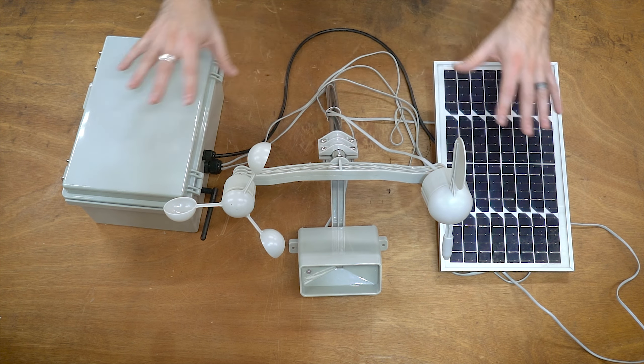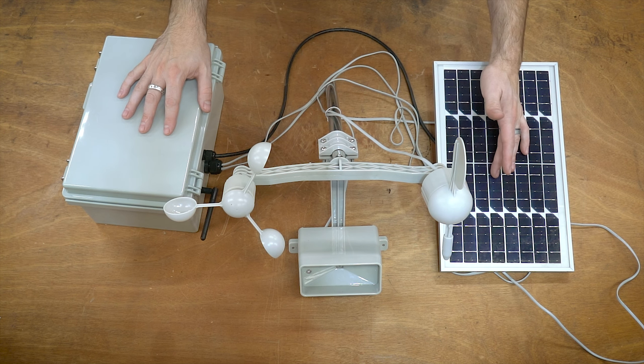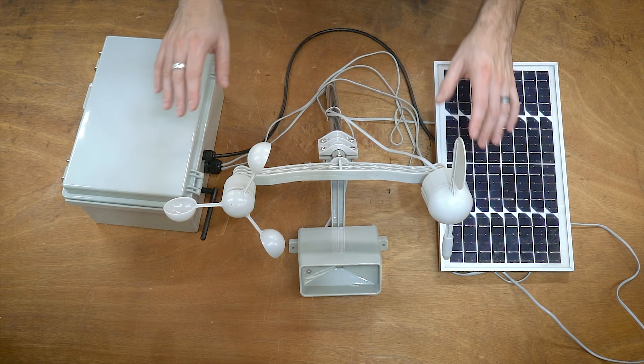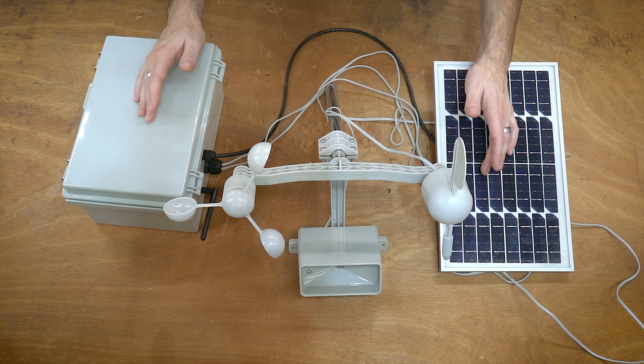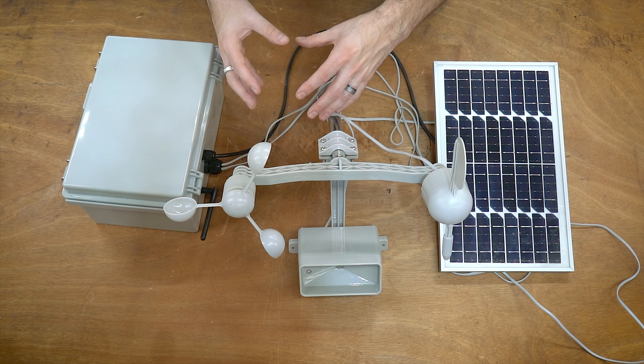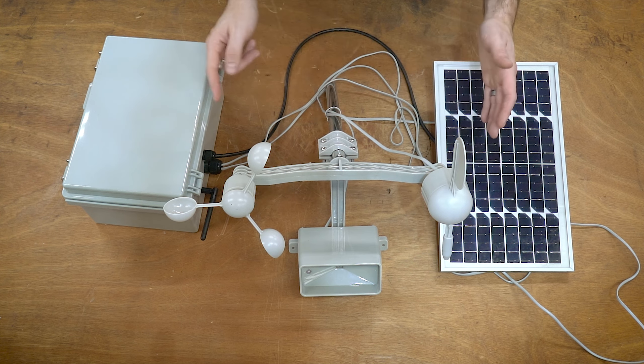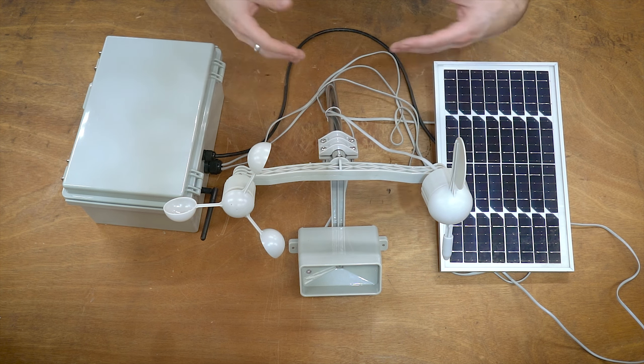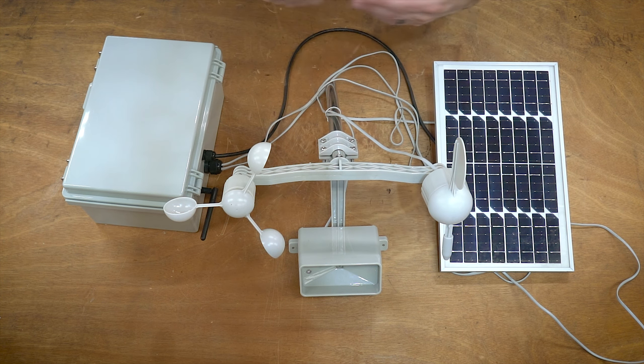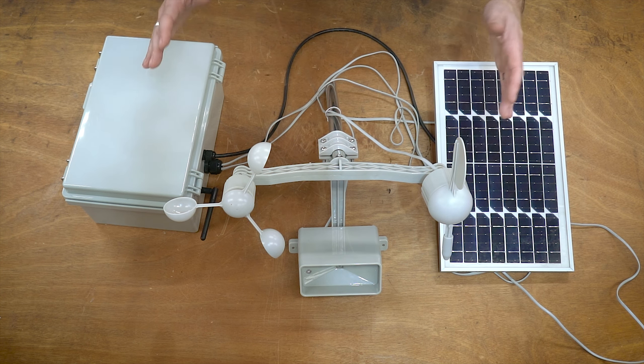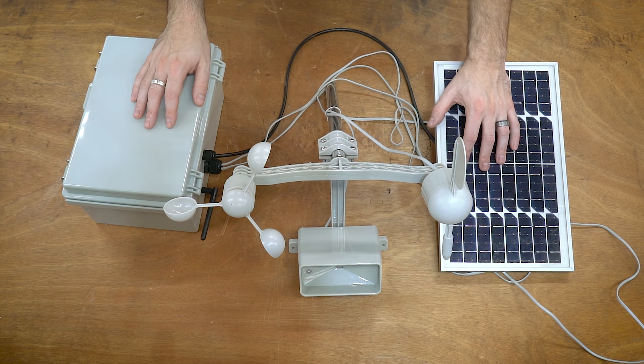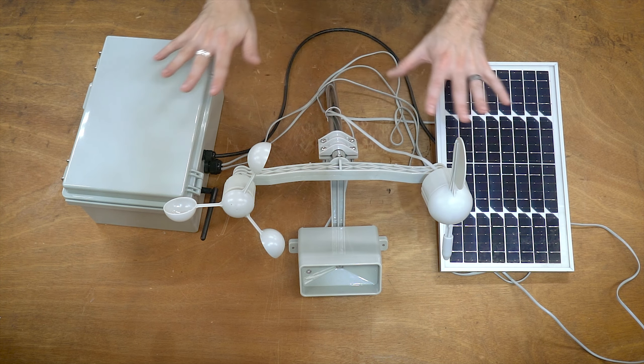The other problem with some of those weather stations that you see on Amazon and elsewhere is they're kind of proprietary, they just have an outdoor thing and then they have the indoor thing, and you can't really easily hack into that and get the actual wind speed out of it. So that is why I came up with this. And I've talked about this a little bit in my other video, but it needed to be self-contained.